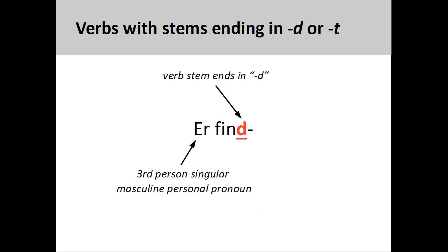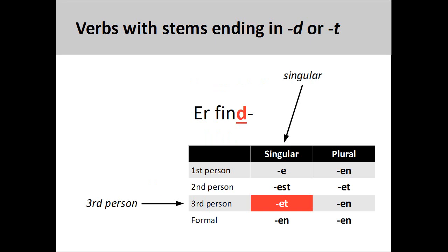To conjugate verbs ending in '-d' or '-t', we follow the same process as described earlier, but with one extra step. Remove the infinitive ending for the verb 'finden', to find. Notice that the verb stem ends in '-d', and determine both the number and person of the subject. Here, the subject is a third person singular masculine personal pronoun 'er', 'he'. We then need to find the correct third person singular verb ending on the chart. Here, the appropriate ending '-et' is marked in red.